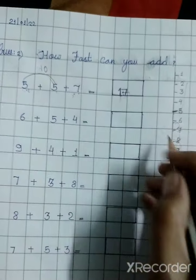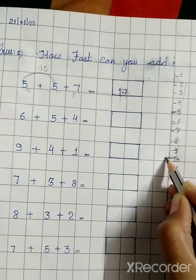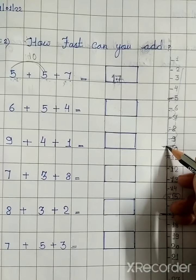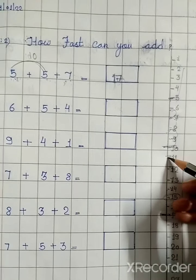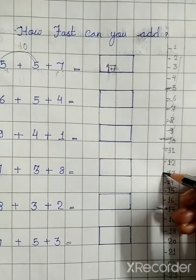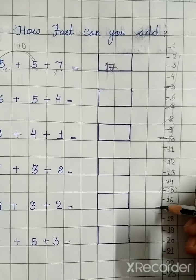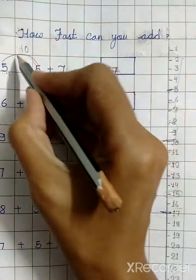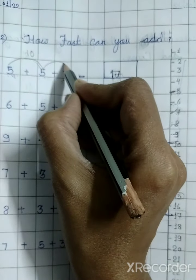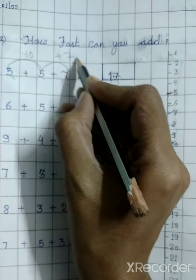Now we have our second number, which is 10. Here we take position and move 7 steps forward: 1, 2, 3, 4, 5, 6, 7. So 10 plus 7 is equal to 17.